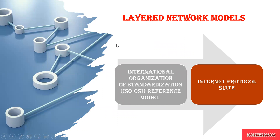Finally, after all these networks, to connect all of them, there is an architectural model that is followed, called layered network models. This layered network model is of two kinds: ISO-OSI — International Organization of Standardization Reference Model — and Internet Protocol. These two models design a complete network to transfer data from one layer to another. More detail about how this network model is developed will be covered in the next video. Please stay tuned. Thank you.